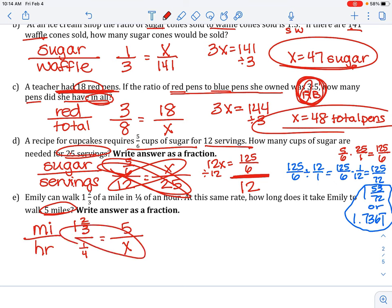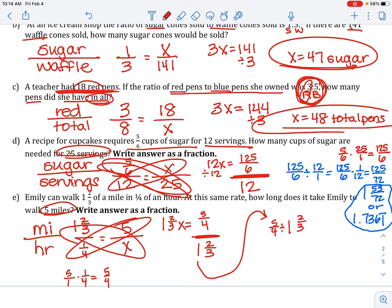Cross-multiply. 1 and 2 thirds x equals 5 over 1 times 1 over 4 is 5 fourths. Next, our last step, is to take 5 fourths, divide it by 1 and 2 thirds. So, let's go over to the side for this. 5 fourths divided by 1 and 2 thirds. We need both of these to be improper. 5 fourths, divided by, 3 times 1 is 3, plus 2 is 5 over 3.